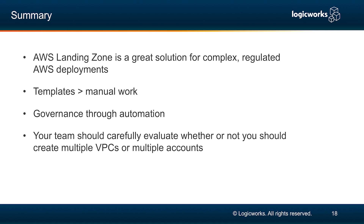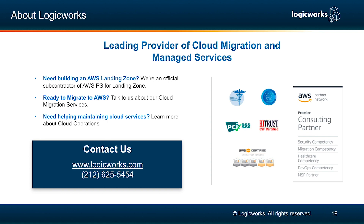To summarize, Landing Zone is a great solution for complex, regulated AWS deployments. We want to templatize and automate everything — templates are way better than manual work, and we don't ever want to do something manually that we can automate. SaaS companies make their money by building applications for their customers, not by managing infrastructure. You have governance through automation. Your team should carefully evaluate whether to create multiple VPCs or multiple accounts, because there are different service limits associated with different VPCs and you really don't want to mix data between them. Thank you for joining us today. Logicworks is a leading provider of managed services and cloud migration services, and an official AWS subcontractor of their professional services team.